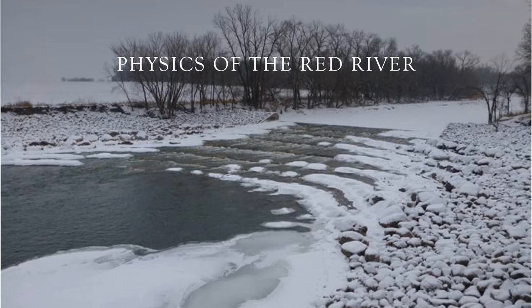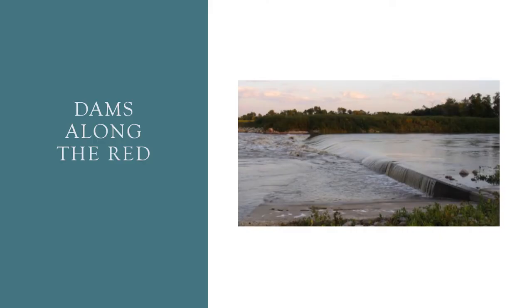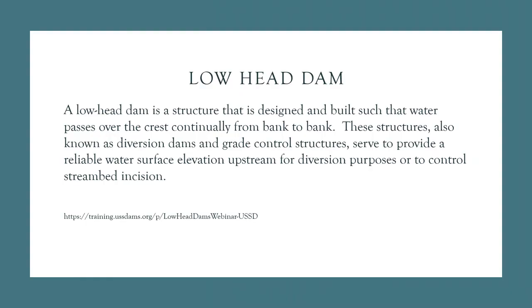The physics of land management within and around the Red River presents some challenges. There are seven dams along the main channel of the Red River. However, in the past, many of these dams were constructed as low head dams. These are smaller dams over which water continually flows over the entire length of the dam, as opposed to going through a single spillway.